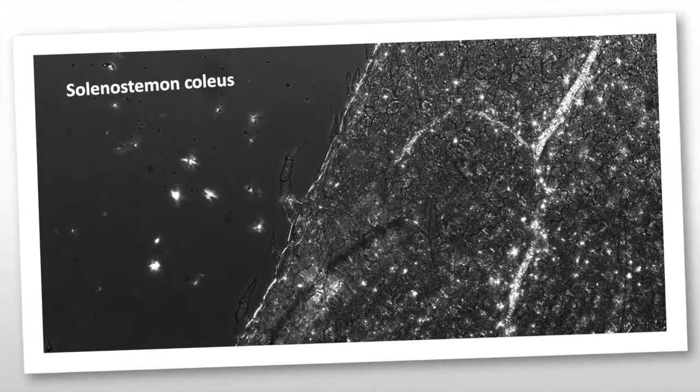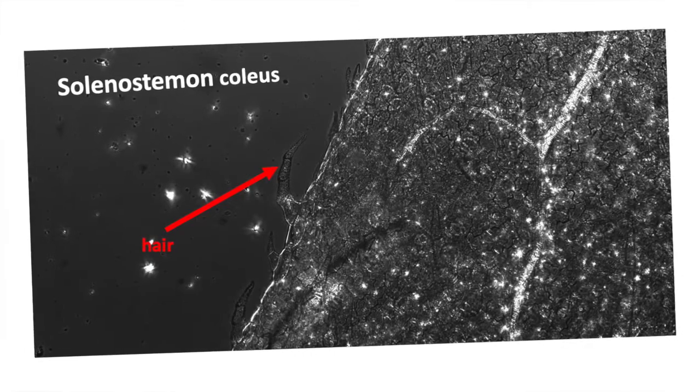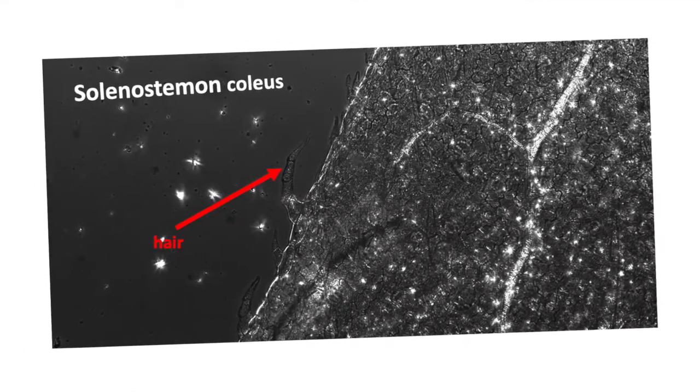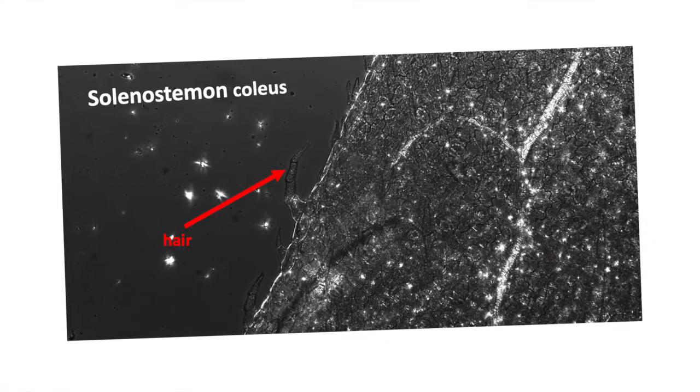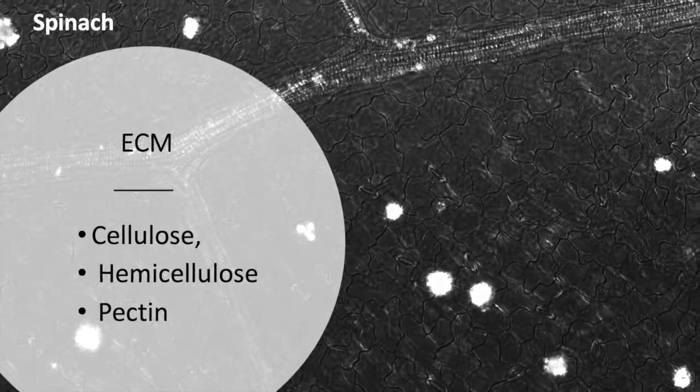After the successful decellularization the leaf scaffold remains. With the microscope, the surface of the decellularized Solenostemon Coleus can be detected. Parsley shows specific stomata and spinach clearly shows the developed and intact venous branches.